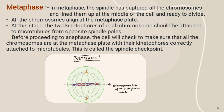In Metaphase, the spindle has captured all chromosomes and lined them up at the middle of the cell, ready to divide. All chromosomes align at the metaphase plate.